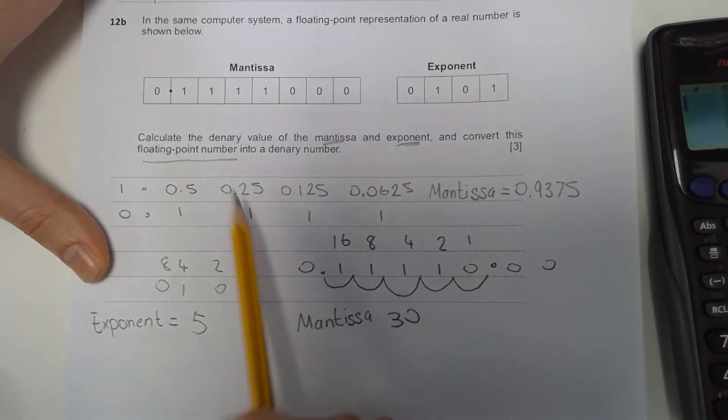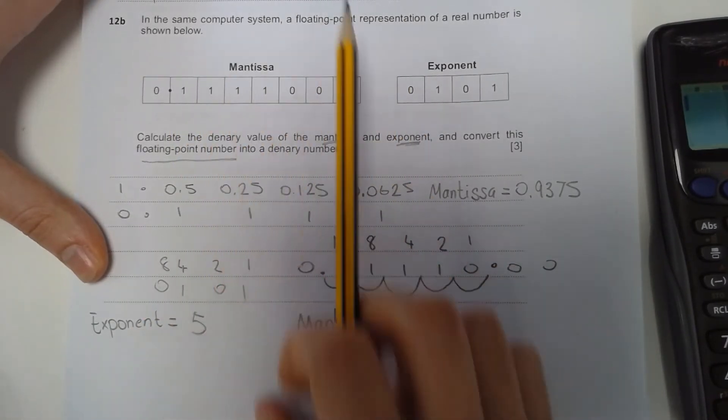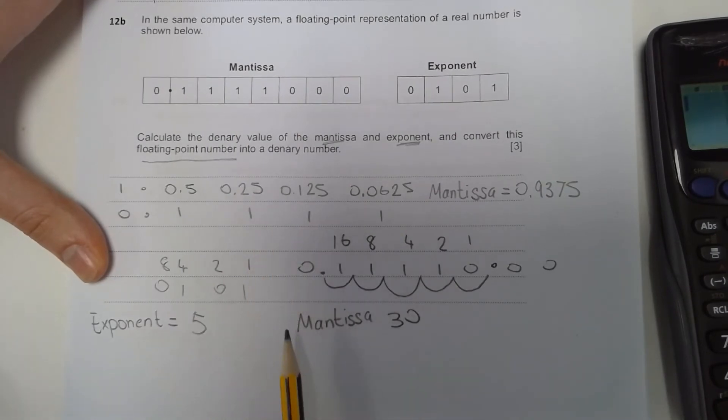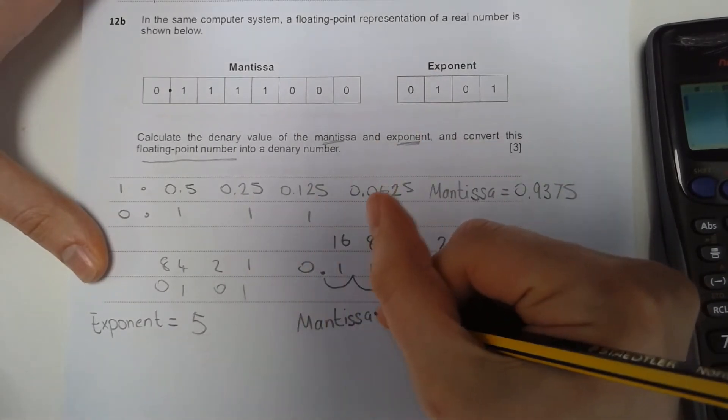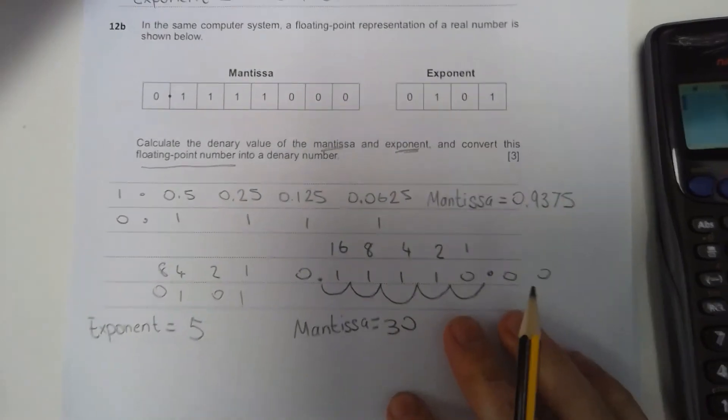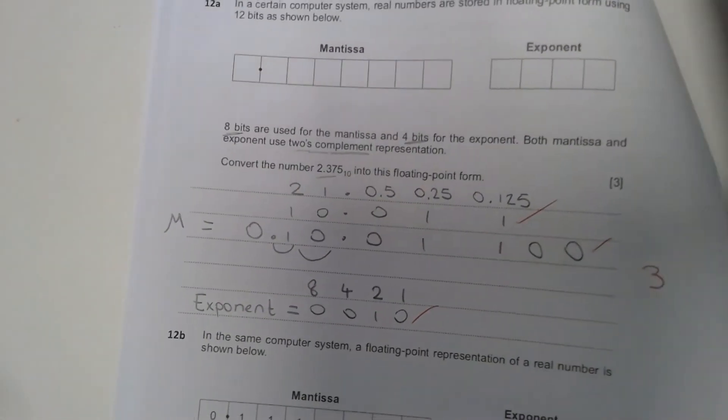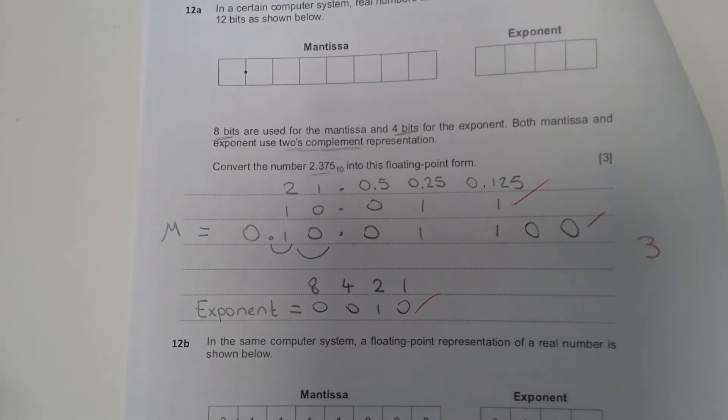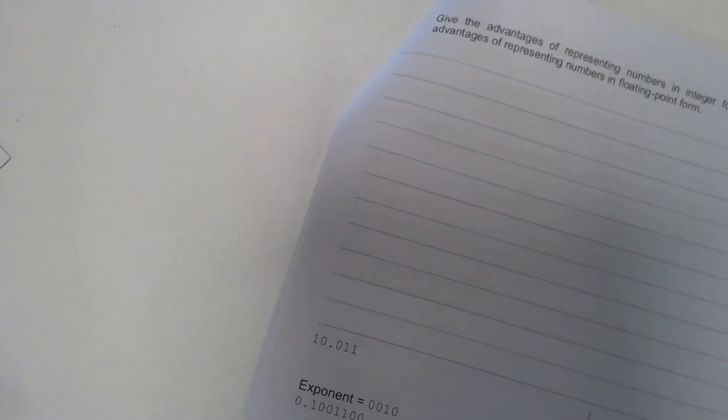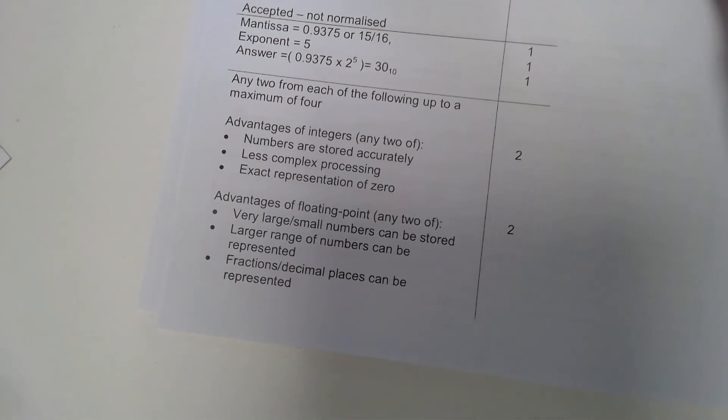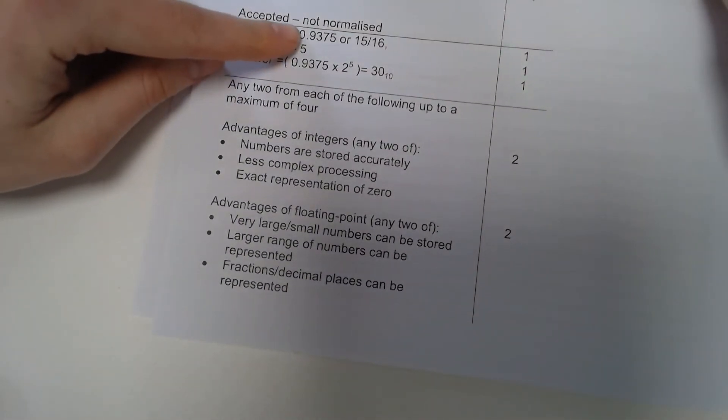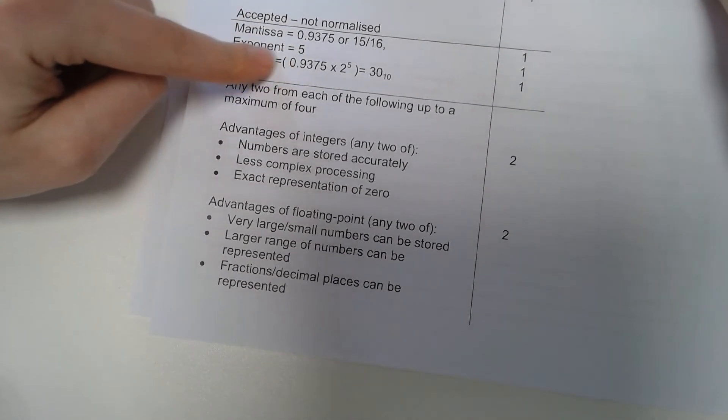But do we need to check something else? Do we need to check that there's any bits that need to be filled out? In this question we don't, so we're okay. This should be our answer if we compare it to our mark scheme. 0.9375, so that's good. Exponent 5. And our answer is 30.